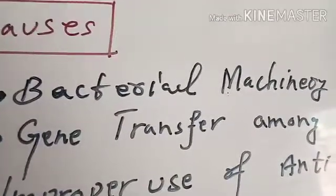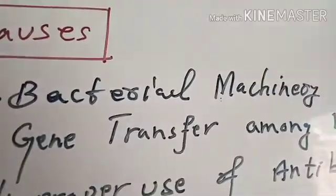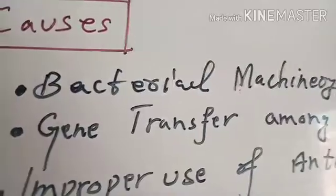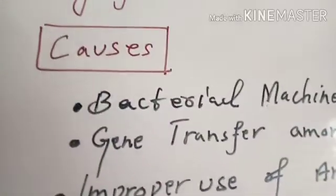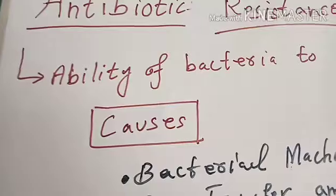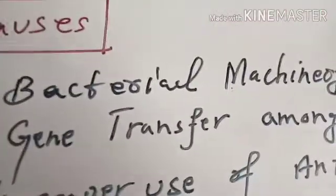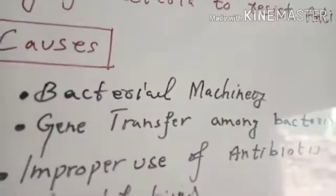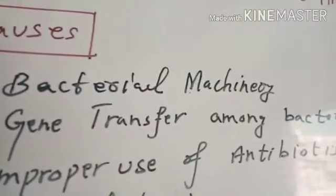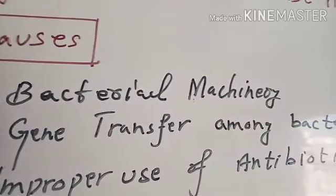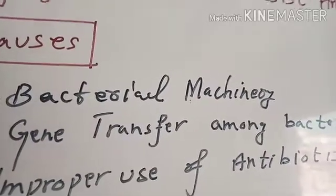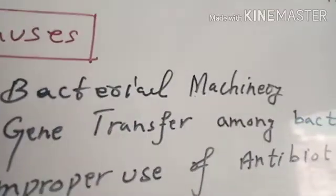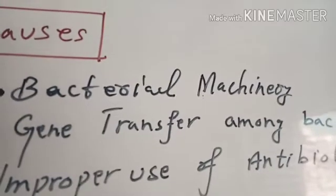Some bacteria are more powerful strains compared to others and have more antibiotic resistance in them. Another cause of antibiotic resistance in bacteria is gene transfer among bacteria. Bacteria which have developed resistance against antibiotics can transfer this ability to other bacteria.